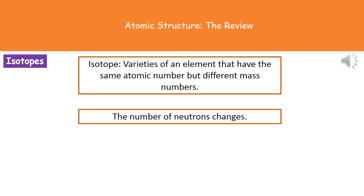And what we find is that that particular element will have different varieties. They've got the same atomic number, but different mass numbers. And the reason for that is that we see the number of neutrons changing. The protons and electrons stay the same, but they will have different numbers of neutrons in those different isotopes.